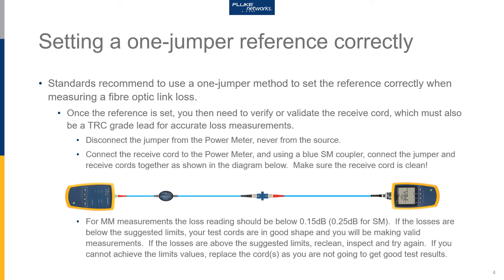Disconnect the jumper cord from the power meter — never break at the source connection. If you break the connection at the source, you have to go and set the reference again. Connect the receive cord to the power meter, then connect the jumper and the receive cords together as shown in the diagram. We're using a blue single mode adapter, as we find single mode adapters lead to a better overall reference result.